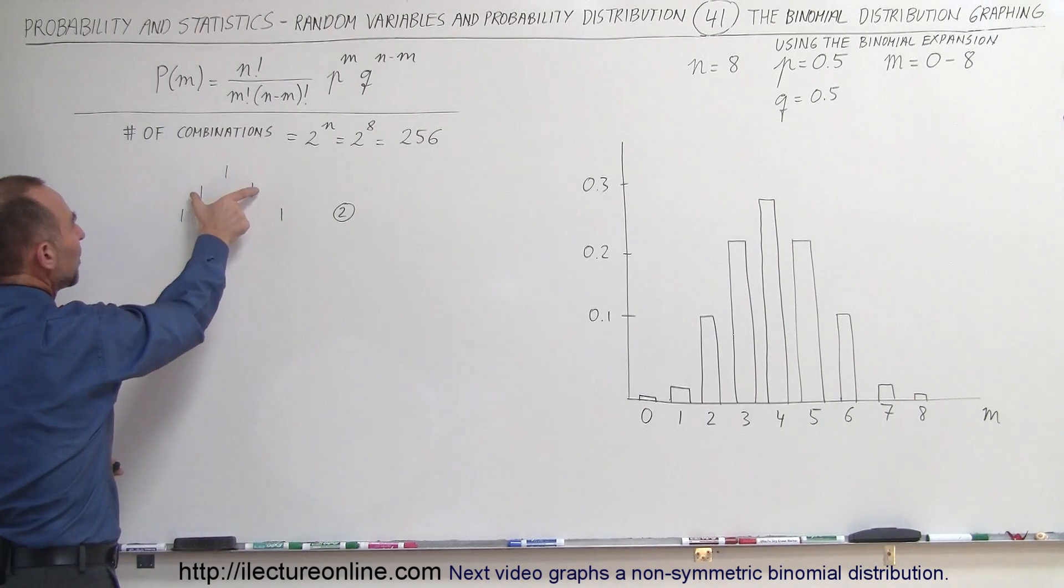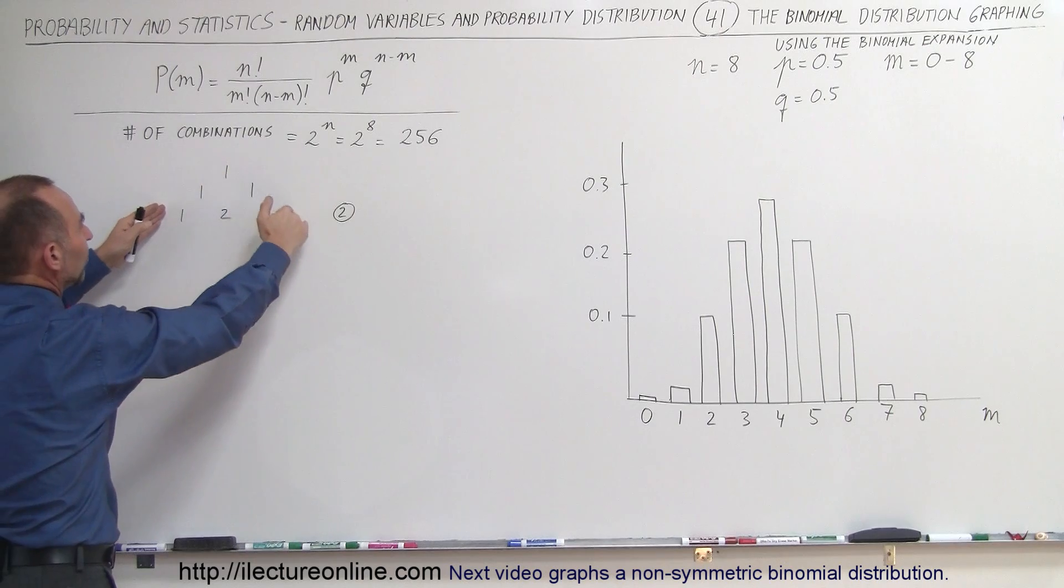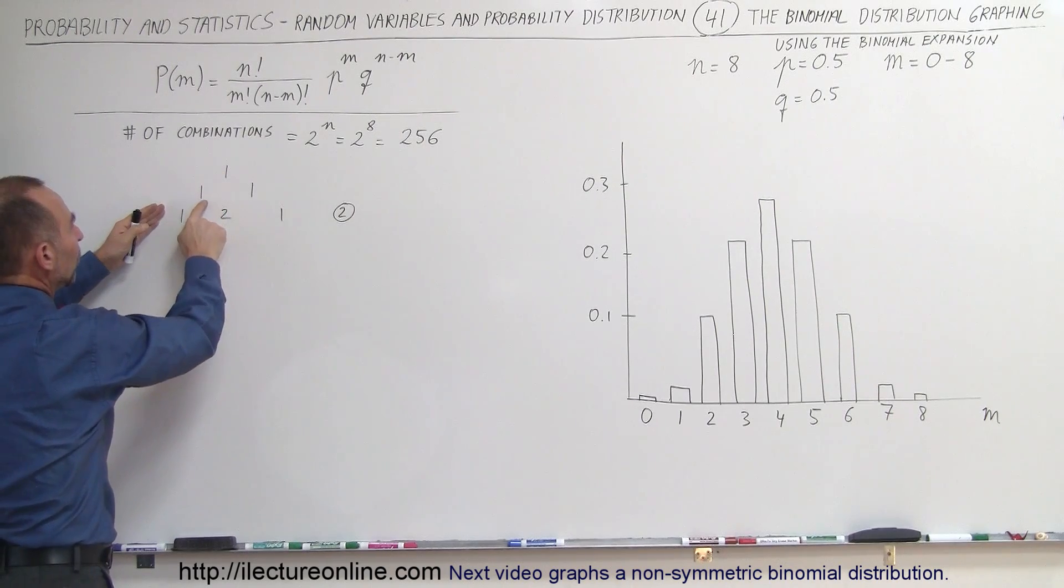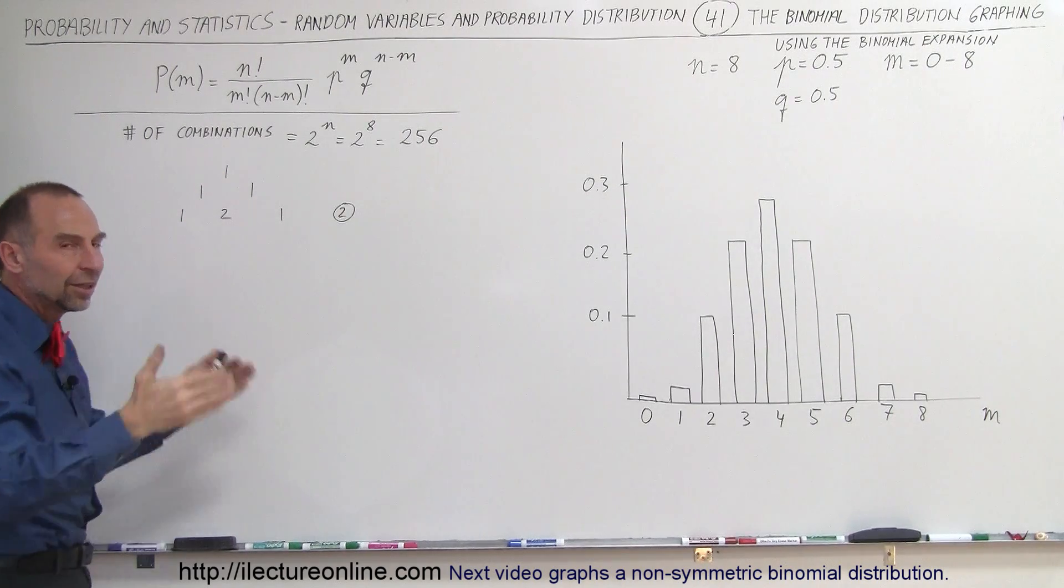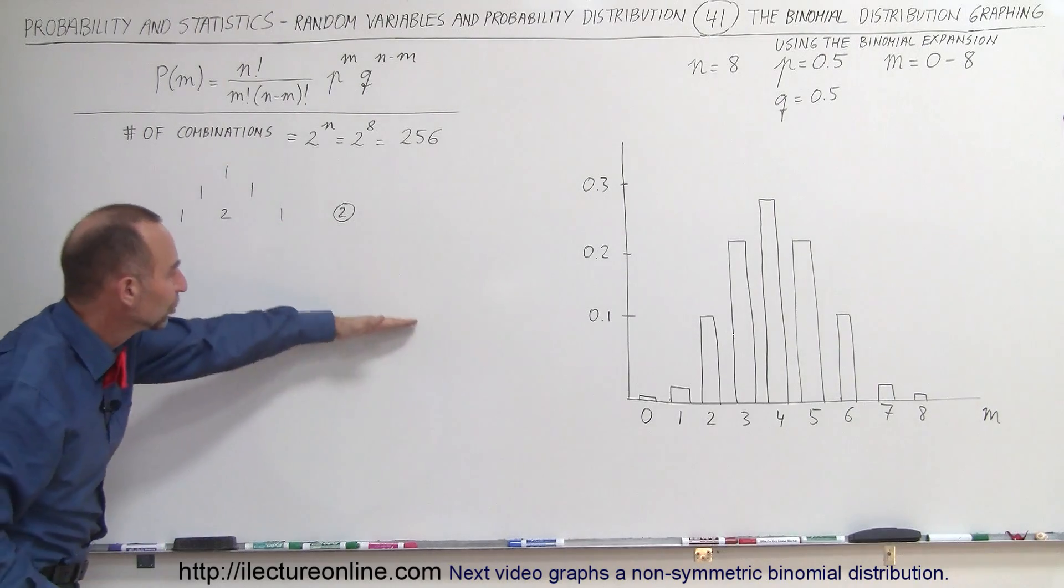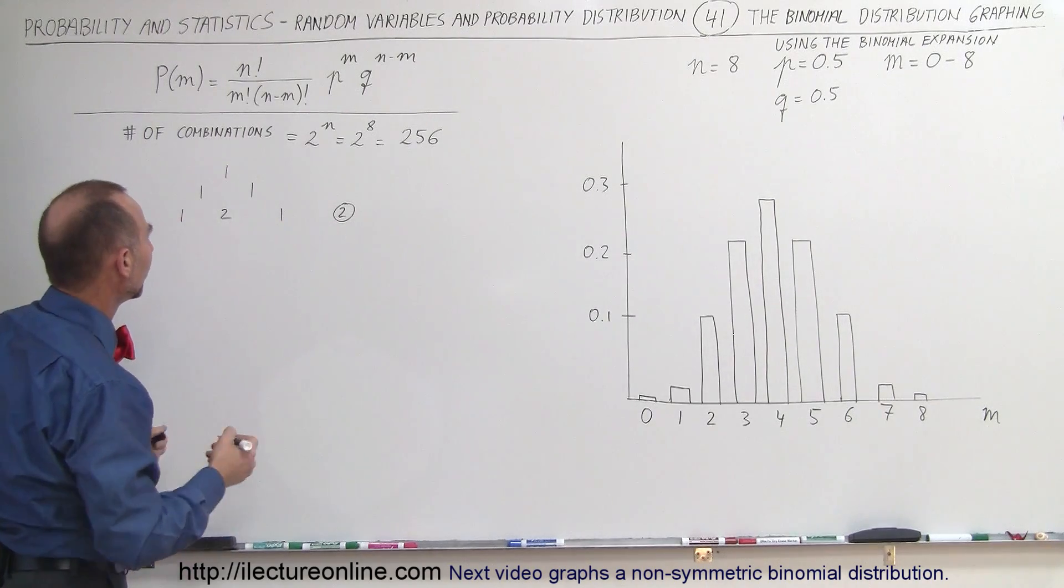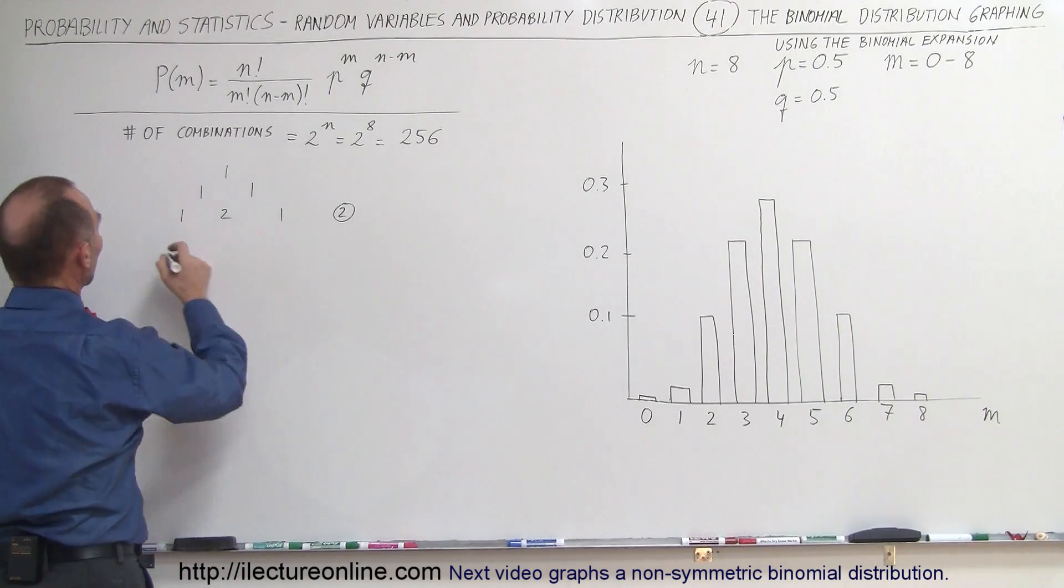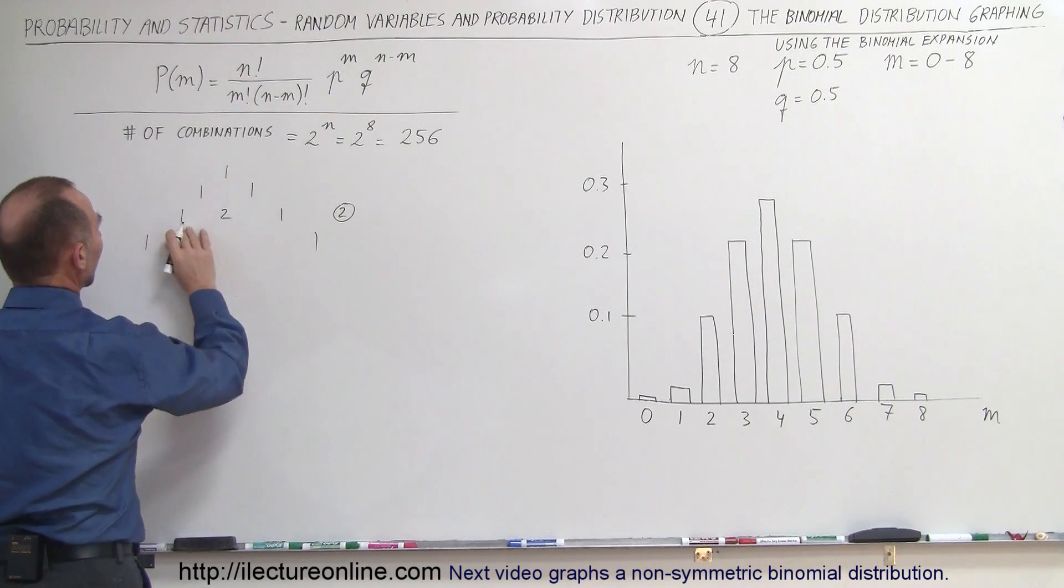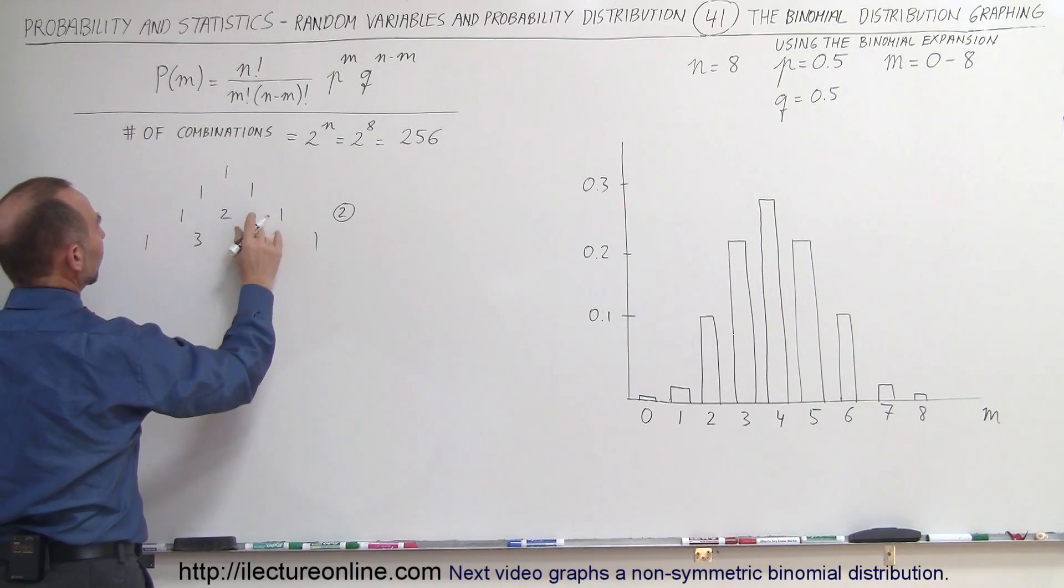So we start with a 1, then we break that out into two ones, then we move the ones to the side and we add these two together. 1 plus 1 is equal to 2. And we continue doing that until we get all the way up to the 8th row here. So the third row, again, we bring the ones out. We add the 1 plus the 2 gives us a 3. 2 plus 1 gives us a 3. That is the third case, that is when there's n equal to 3 trials.